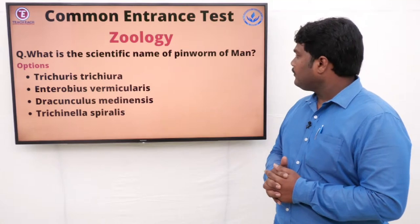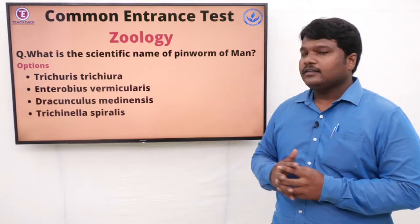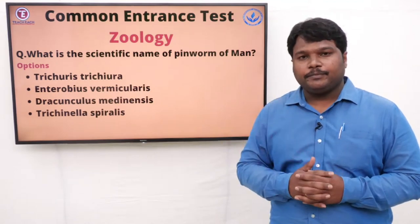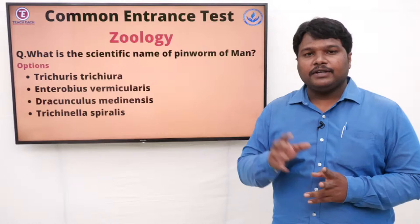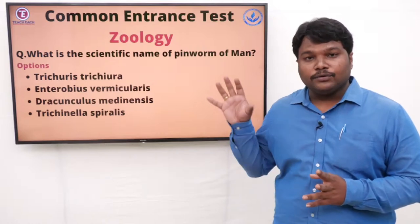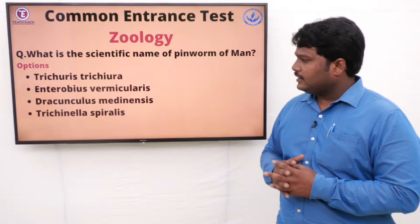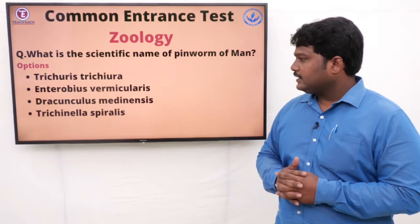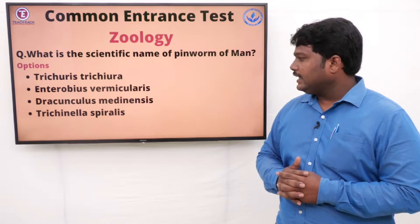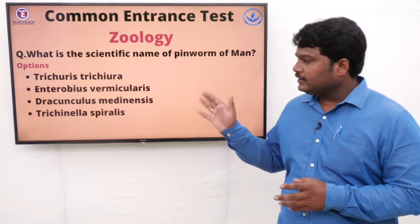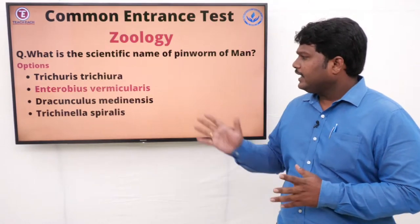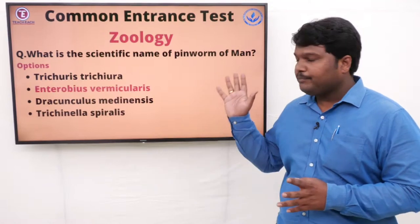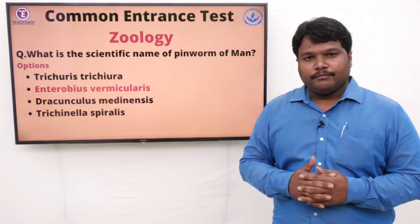Question 47: What is the scientific name of the pinworm of man? There are many types of pinworms — which pinworm causes infection in man? Options: A) Trichuris trichiura, B) Enterobius vermicularis, C) Dracunculus medinensis, D) Trichinella spiralis. The right answer is Enterobius vermicularis. Enterobius vermicularis is the disease caused by pinworm in man, and its scientific name is Enterobius vermicularis.